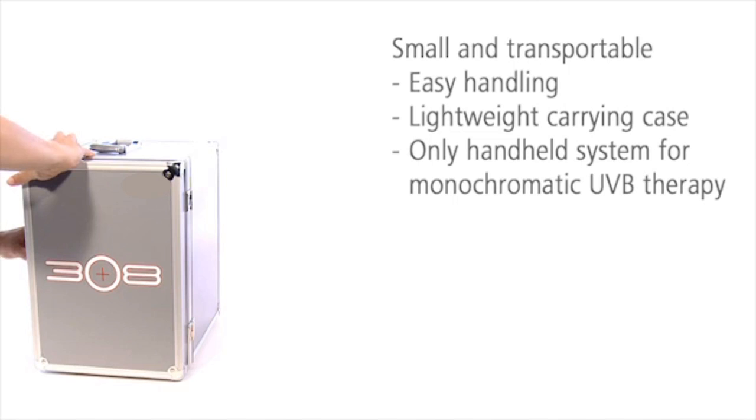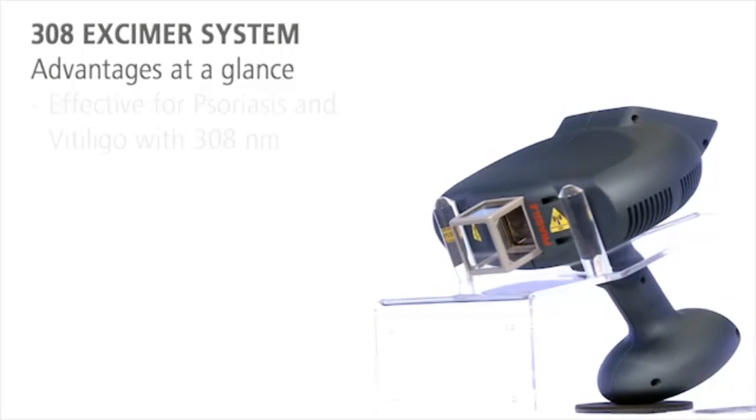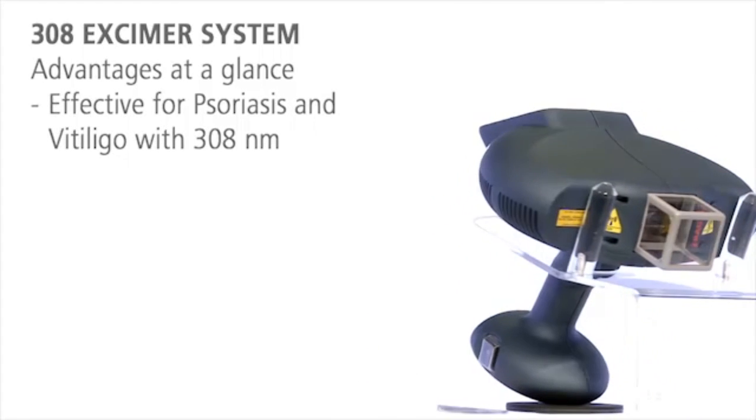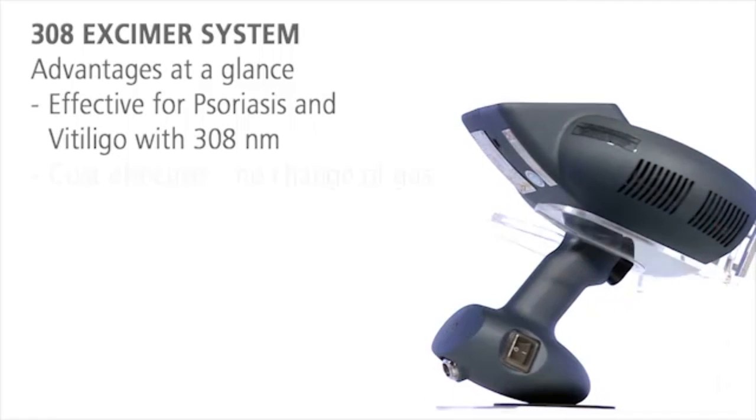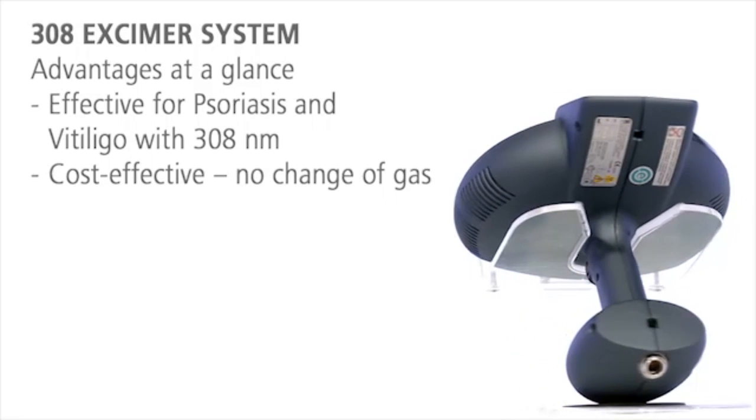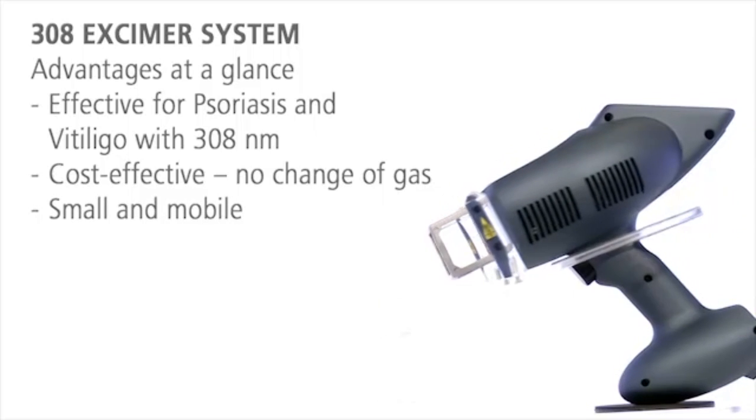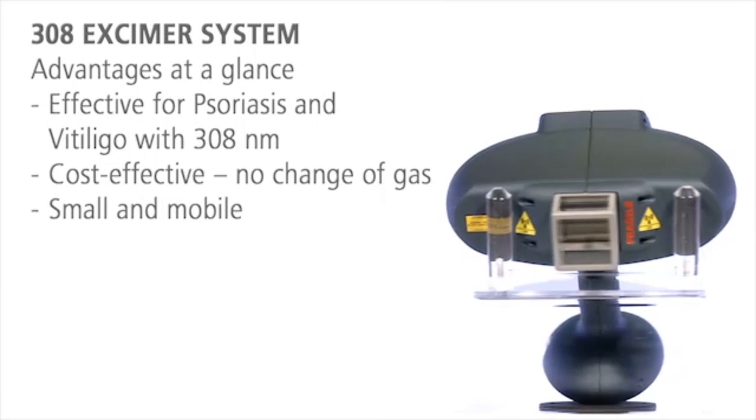The 308 Excimer System has three decisive benefits: its intense monochromatic UVB light is highly effective for the targeted treatment of psoriasis and vitiligo. Its low acquisition and operating costs make the system very cost-effective. And with its small size, the mobile 308 Excimer System can be used at various locations.